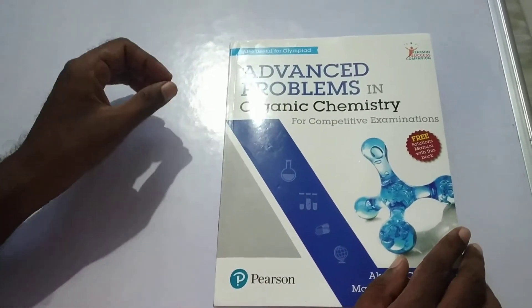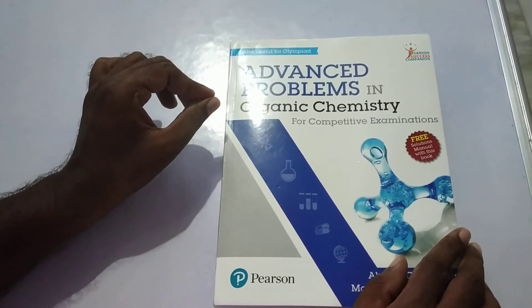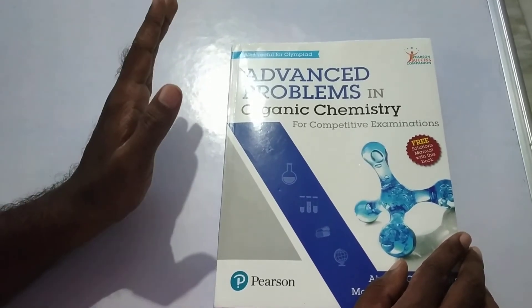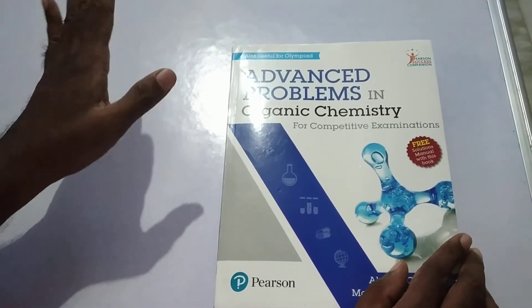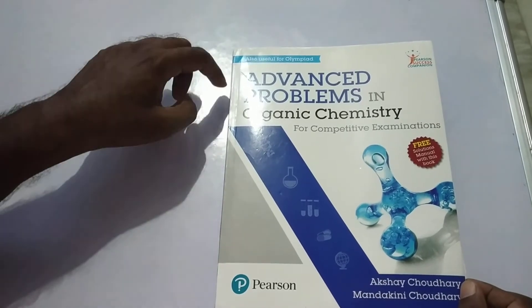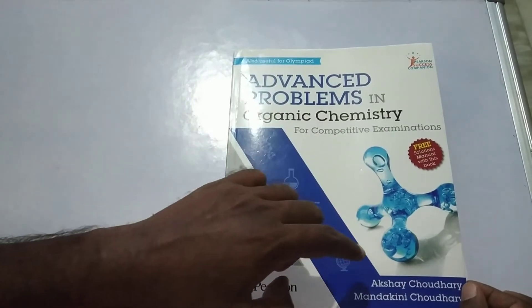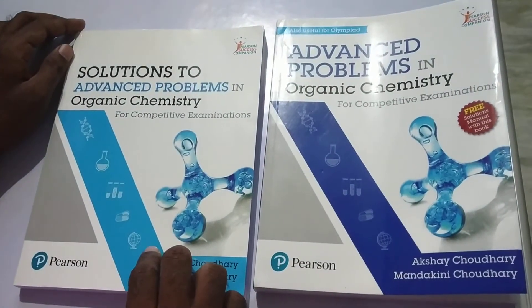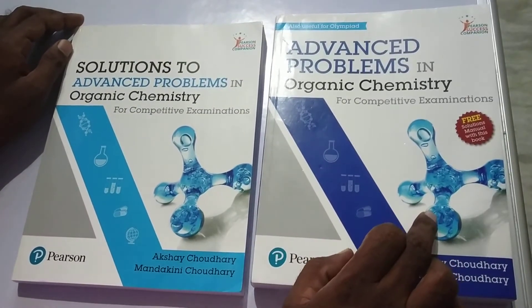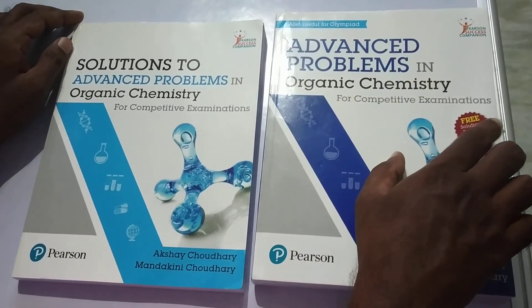Therefore students, it is a very good book. You must go through the book. It is very good for organic chemistry. If you want to have any alternative for M.S. Chauhan and Himanshu Pandey, you can choose Advanced Problems in Organic Chemistry for Competitive Examinations written by H.C. Chaudhary and Mandakini Chaudhary. There is a bonus for you. Advanced Problems in Organic Chemistry for Competitive Examinations - you can get the free solution manuals with this book.